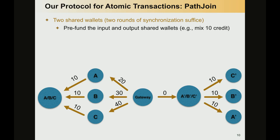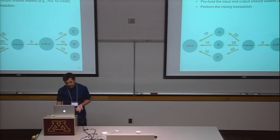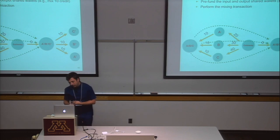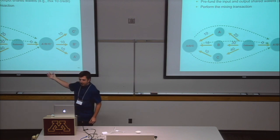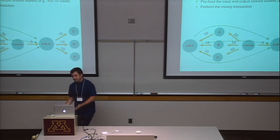What we need at this moment is to somehow automatically force the three users to fund the link between the gateway and the output shared wallet. For that, we use the second synchronization round, which we call the mixing transaction. This transaction has a single sender — the input shared wallet — a single receiver — the output shared wallet — and three paths, where each path contributes 10 credits. This transaction is fully valid in the Ripple network because it has only one sender, one receiver, and several paths.